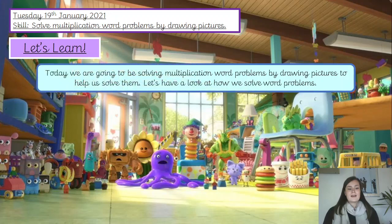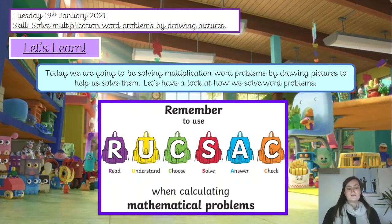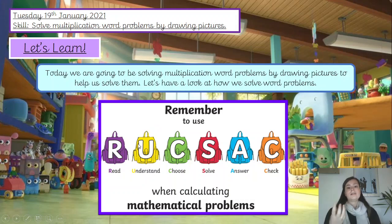So today, as the skill suggests, we are going to be solving multiplication word problems by drawing pictures to help us solve them. The first thing we need to do is remind ourselves how we solve word problems. We use Rucksack — and to any parents, grandparents or adults working with this today, this is something we've used before. It's a simple way to remember how we approach word problems. First, we read the question and make sure we understand what it's asking us to do. Then C — we choose which operation to use. For today's lesson, we know we're always going to be choosing multiplication.